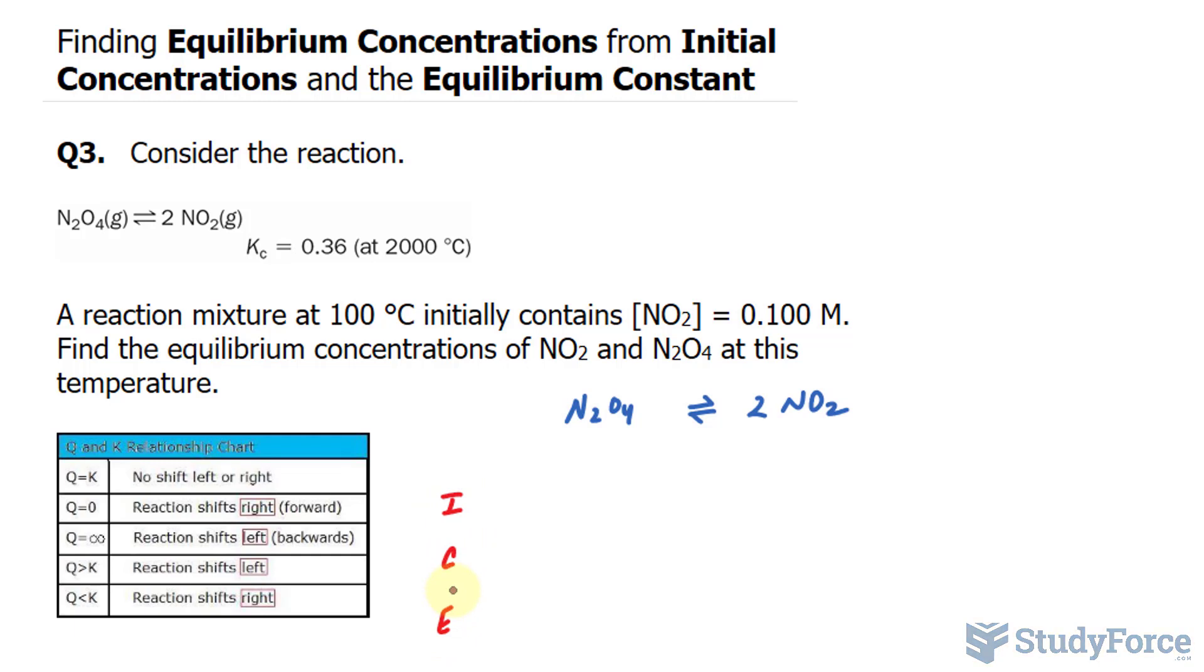And they've already given us some information. They've told us that the concentration of NO2 is 0.100. That's the initial concentration. So I'll write that down. And the initial concentration of N2O4 will be 0 because we're assuming we're starting here and we're producing this.